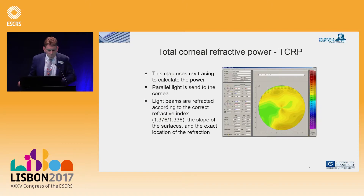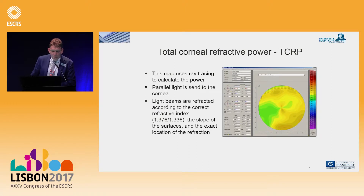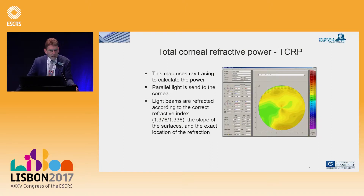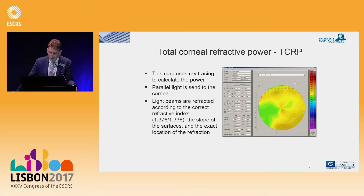More intriguing is the total corneal refractive power (TCRP), because this map uses ray tracing to calculate the power. Parallel light is sent to the cornea, and the light beams are refracted according to the correct refractive index of 1.376, the slope of the surface, and the exact location of refraction. A map example is shown here.